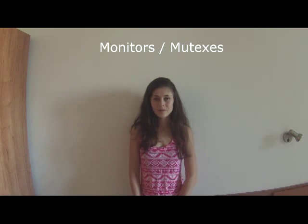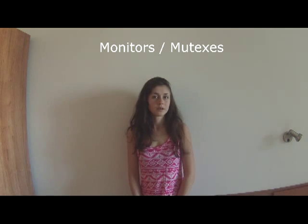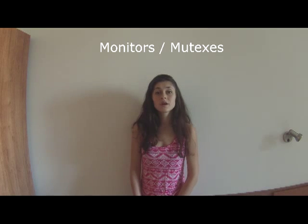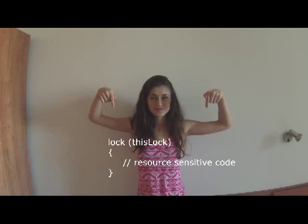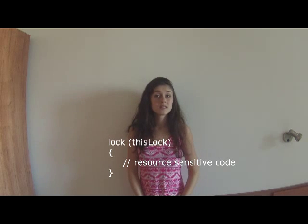Next are monitors and mutexes. Monitors are code-block specific, meaning you wrap the code that involves resource sharing with a lock statement like this. This is like a tall bridge that only allows one truck to pass through at a time — the truck that gets there first is allowed to pass while all others wait. Mutexes are simply like monitors but can be named and applied across multiple processes.